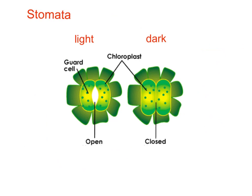On the subject of stomata, here are two, just to highlight their job. The one on the left is in the light and the stoma — the air pore — is open. It's open because the guard cells have taken in water and swollen up. As they swell up, they push each other apart. In the light, what we want is carbon dioxide to be able to get into the leaf for photosynthesis, so this works really well.